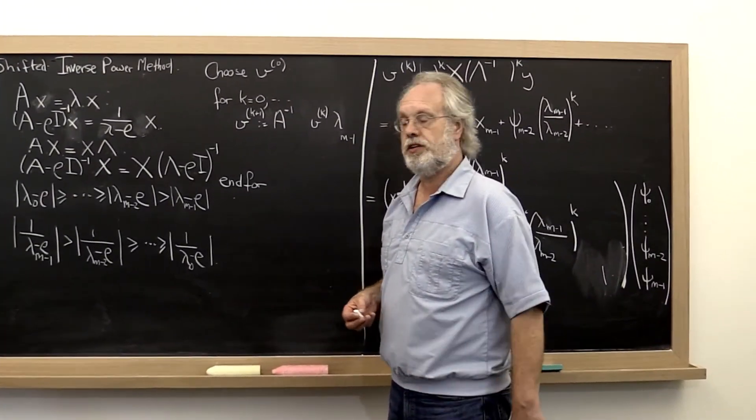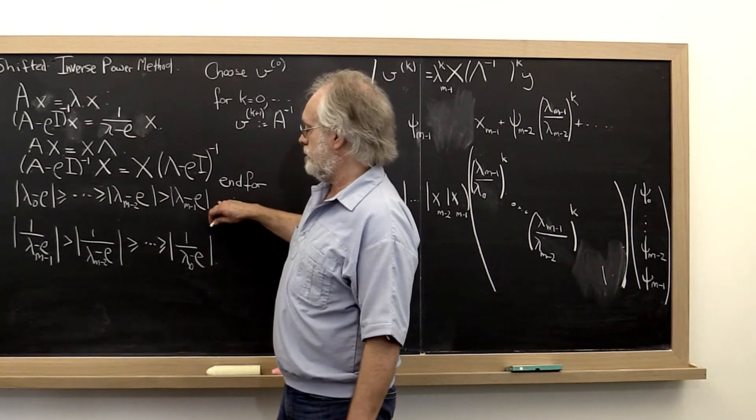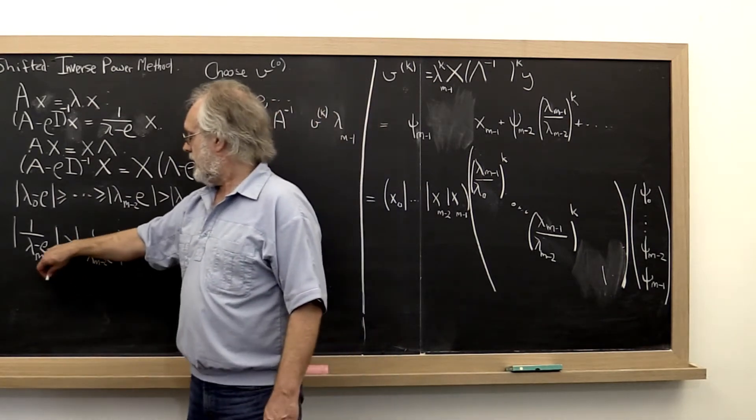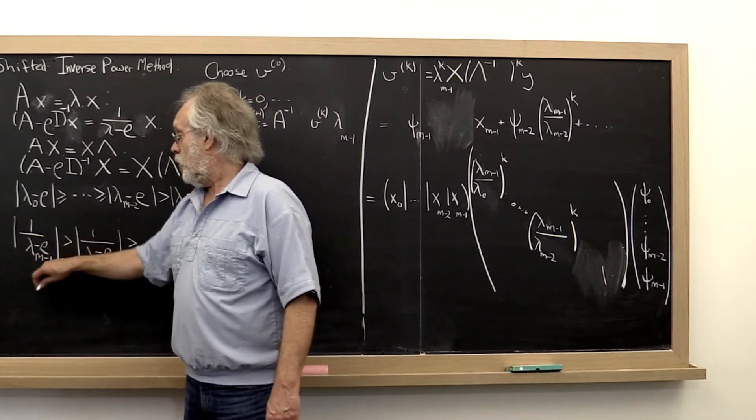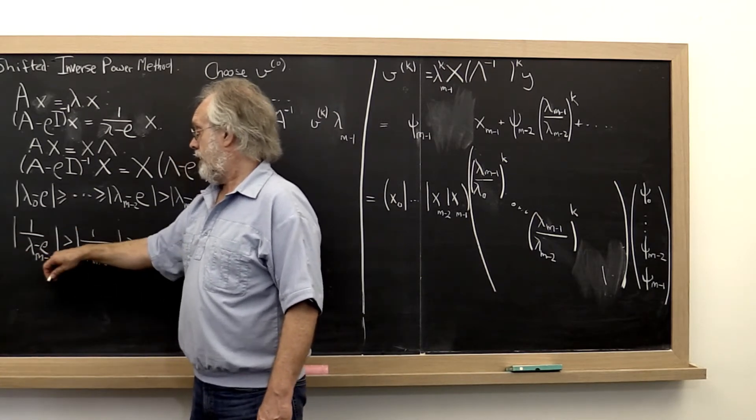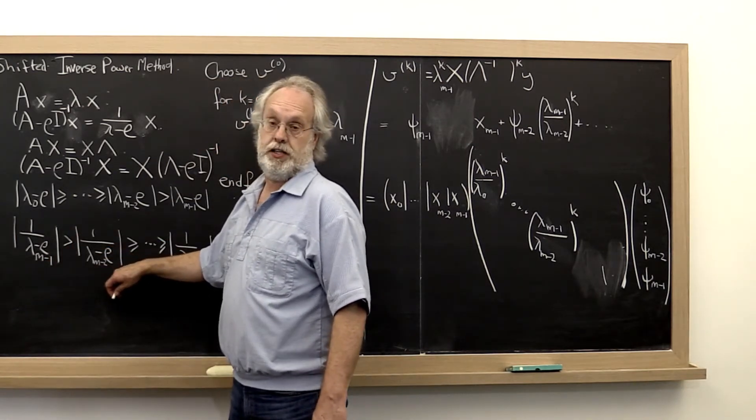So why is shifting the matrix a good idea? By shifting the matrix, we shift the spectrum. And by shifting the spectrum, if rho is very close to lambda n minus 1, we can make this ratio very, very large, especially large relative to this next ratio.